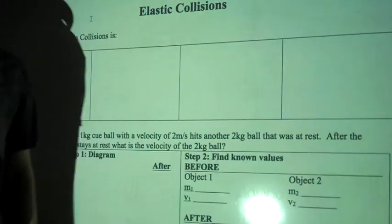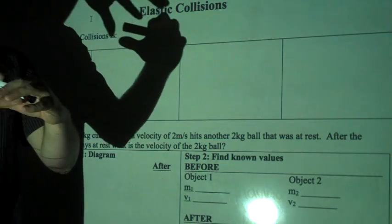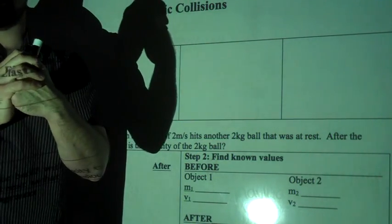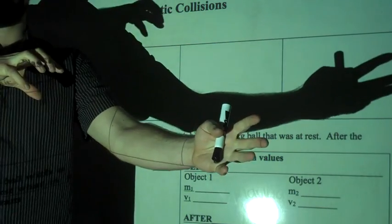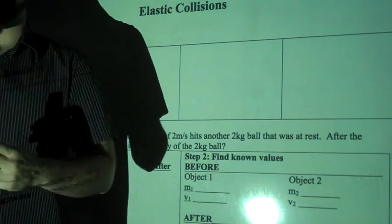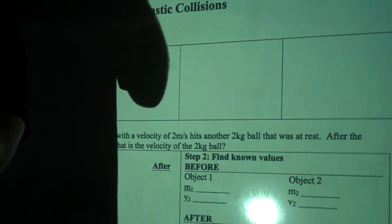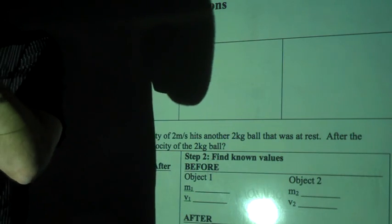There's momentum of two different objects, they're moving and they hit, and then the two different objects are also moving. The inelastic collisions that we were talking about before, something would hit and they would join forces, their masses would combine.